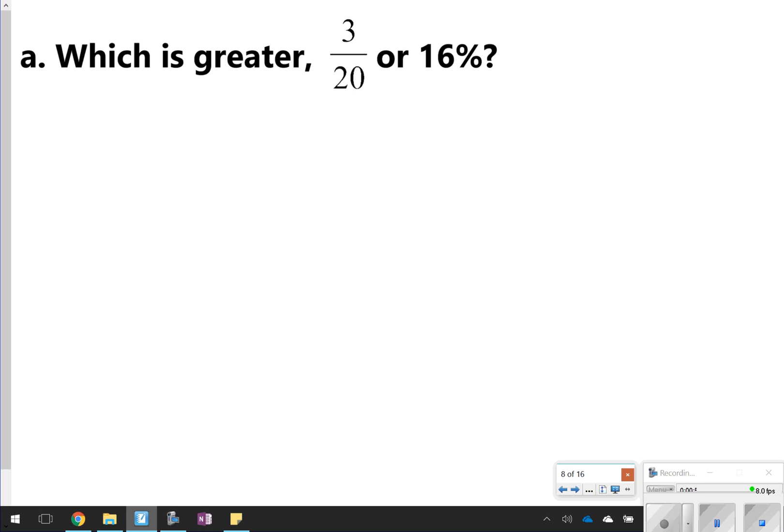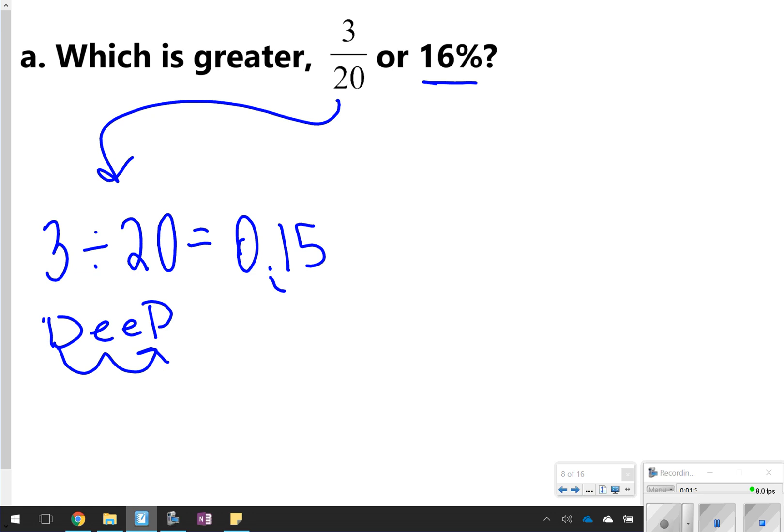So this first one I'm going to show you how to do, and then the next you're going to try on your own. It says, which is greater, 3/20 or 16%? Since both of these are in different formats, I'm going to change them to the same format. I notice I already have one percent, so I'm going to change this 3/20 into a percent. Remember how you do that is you take 3 and divide it by 20, and that gives you a decimal. The decimal is 0.15, and then to change decimals to percents, you're moving the decimal twice to the right. So 1, 2, that means it's 15%. So you're basically comparing 15% and 16%. Obviously, 16% is larger, so back to the question, 16% will be greater.